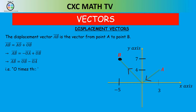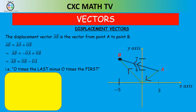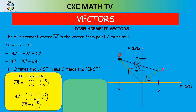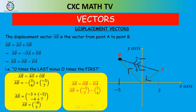In general, vector AB = OB − OA: that is O times the last minus O times the first. To prove it: vector AB = vector AO + vector OB = −(3, 4) + (−5, 7) = (−8, 3). Using the formula: OB − OA = (−5, 7) − (3, 4) = (−8, 3). That is vector AB.